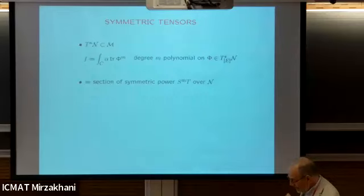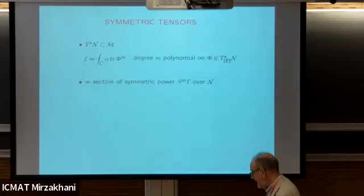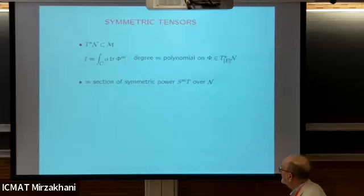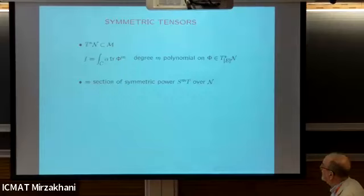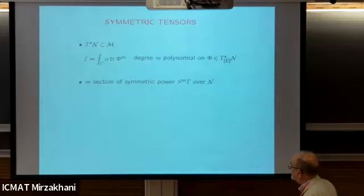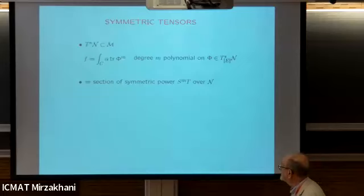There's another way of thinking of this integrable system when we restrict to stable bundles. We look at the cotangent bundle of the moduli space of stable bundles - a dense open set inside the moduli space of Higgs bundles. Each of these functions is a degree-m homogeneous polynomial on each cotangent fiber. Another way of saying this: it's a section of the m-th symmetric power of the tangent bundle over the compact moduli space of stable bundles.